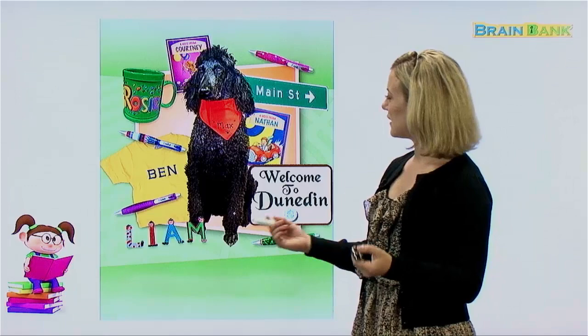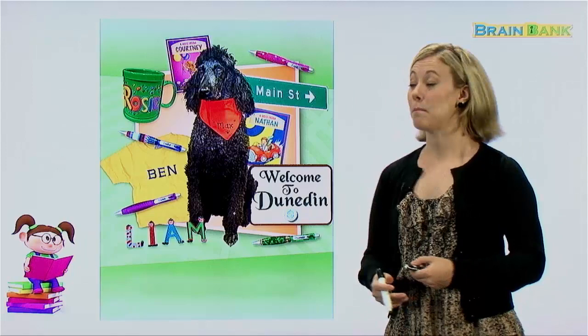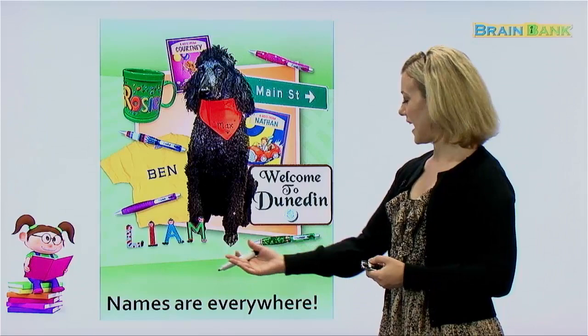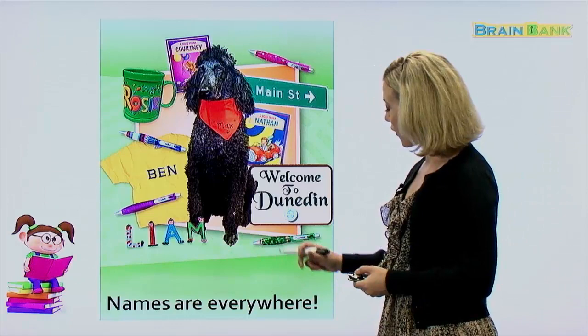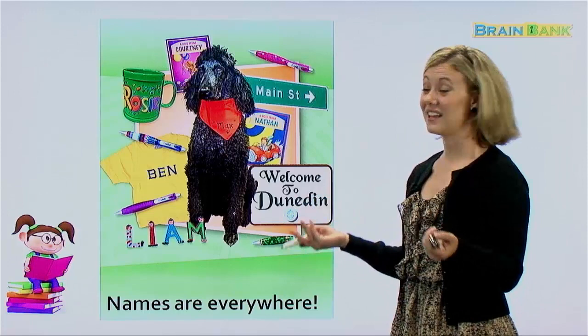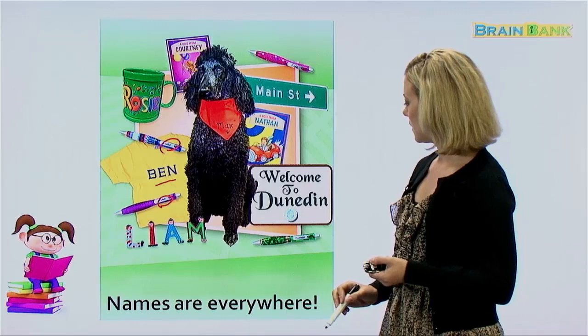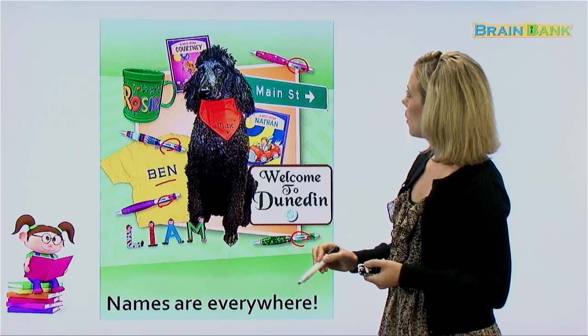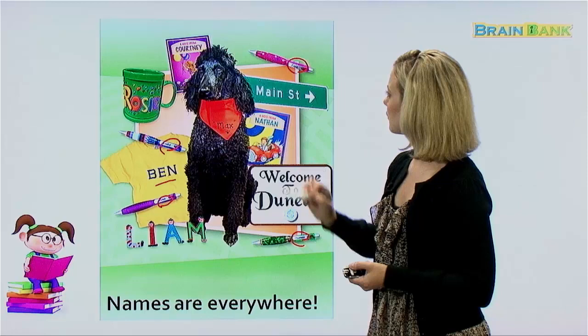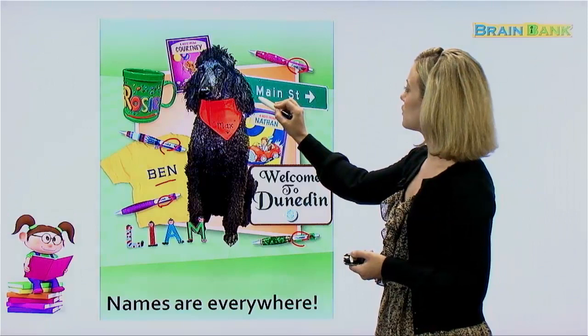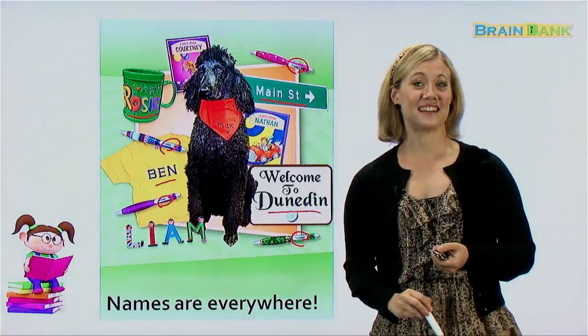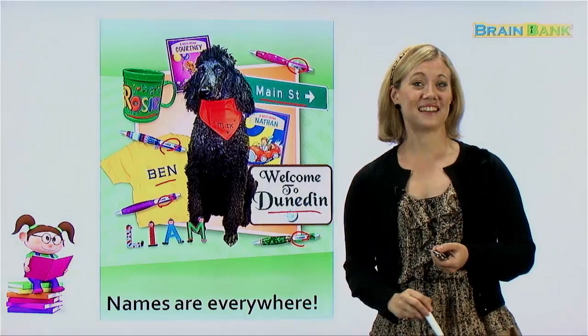Here we have a big picture of many different things — many different things where we see names. Names are everywhere. Let's read it all together: names are everywhere. If you look at this picture, you truly will see that names are everywhere. We have people's names on our shirts, pens with names like Thomas and Zoe, notes or books from different people, names on cups or mugs, street names, city names, and we even name our pets — this dog's name is Max. So we really do see names everywhere. I hope you enjoyed today's lesson, and I'll see you again soon. Bye-bye.